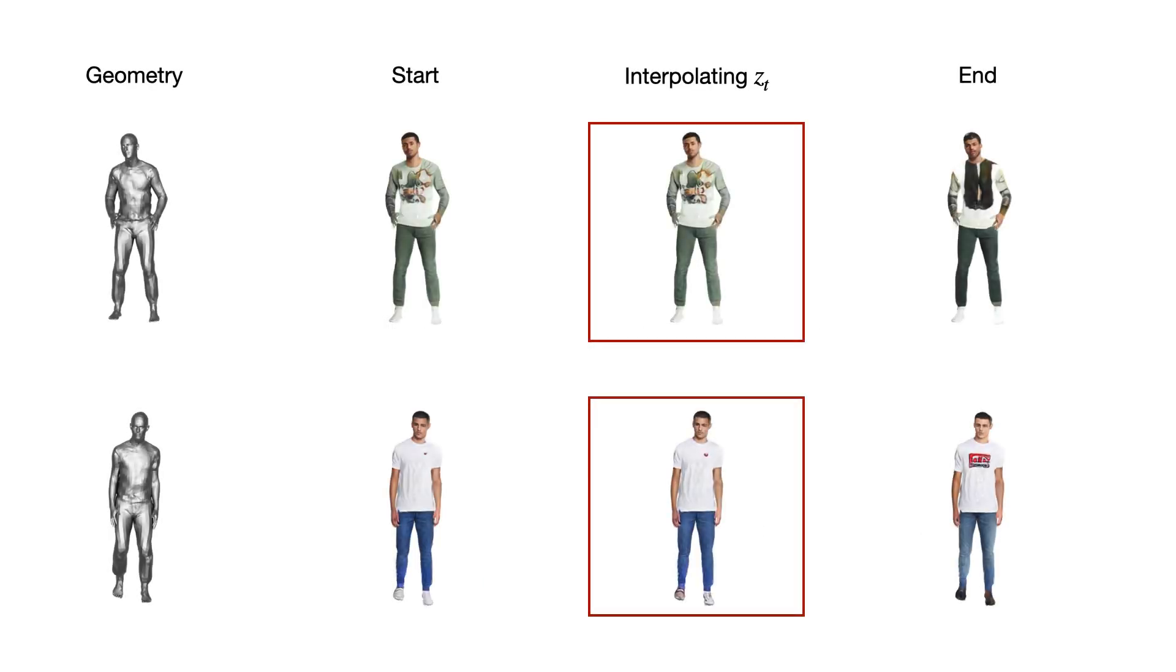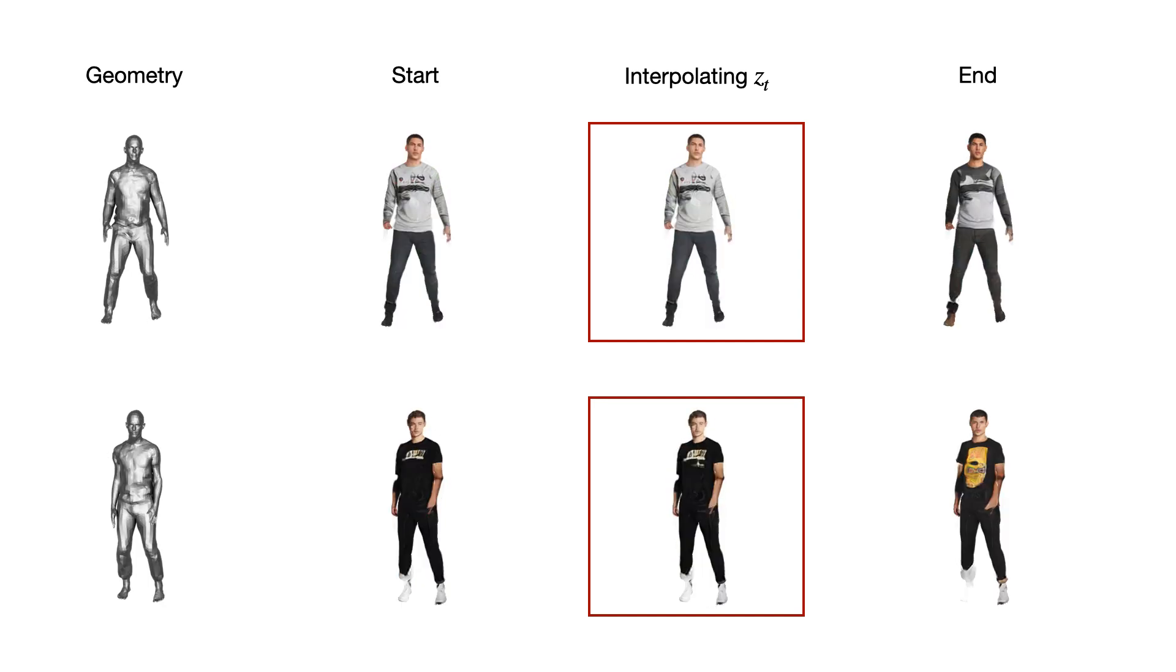Here we show fine texture patterns control or color tone control by interpolating ZT. Please observe the smooth varying texture patterns in the red box with the interpolation of ZT between two textures. Other conditions are kept fixed during the interpolation of ZT.